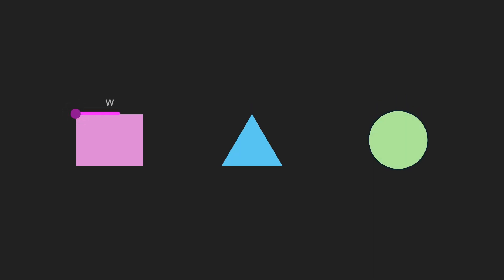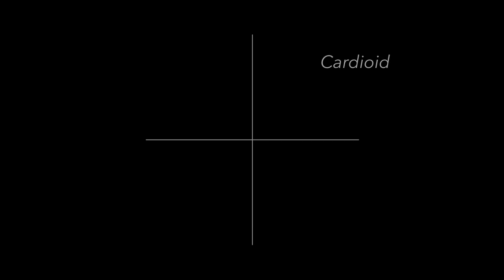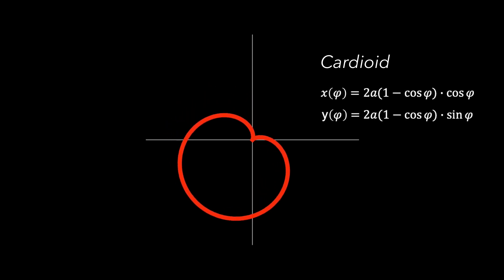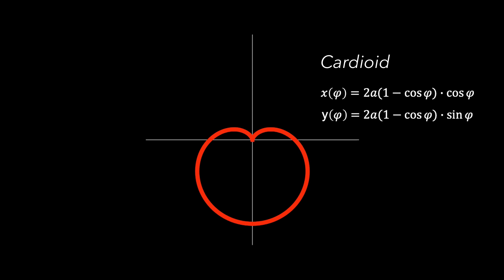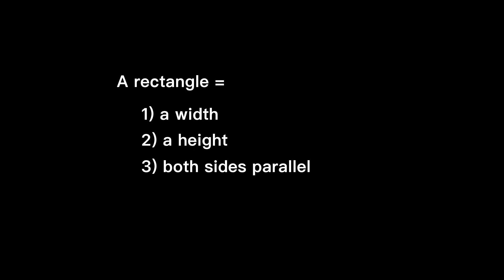A rectangle can be thought of as a width and a height with four straight sides and all right angles. A triangle, or any polygon, can be thought of as points in space connected by straight lines, similar to the rectangle. A circle is a shape with all points that are the same distance from its center — it can be represented by this equation. We can even teach computers to draw more complex shapes, such as the heart-shaped cardioid. The bottom line is drawing each of these shapes can be broken down to a set of rules or equations.